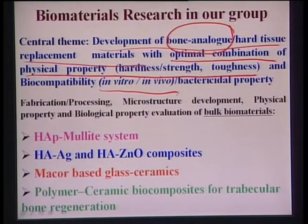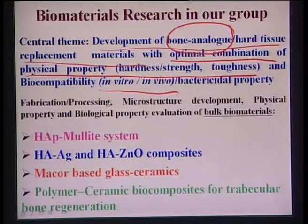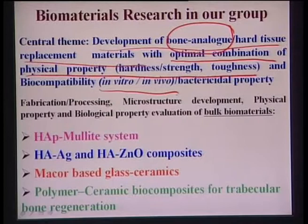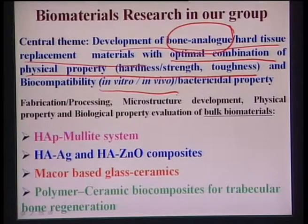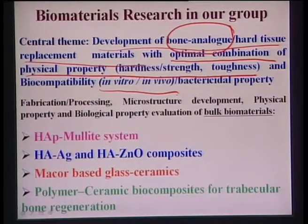In materials science, hardness, strength, and toughness are called mechanical properties, but in biological literature they are often referred to as physical properties. In materials science, physical properties mostly mean density, thermal conductivity, resistivity, and so on. This is just a difference in nomenclature between the materials science community and the biological community.